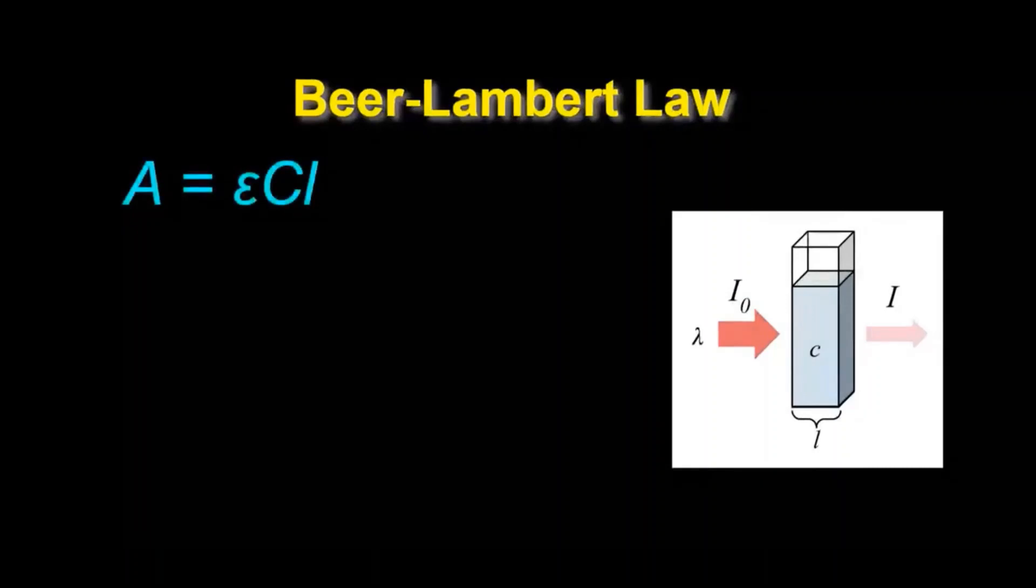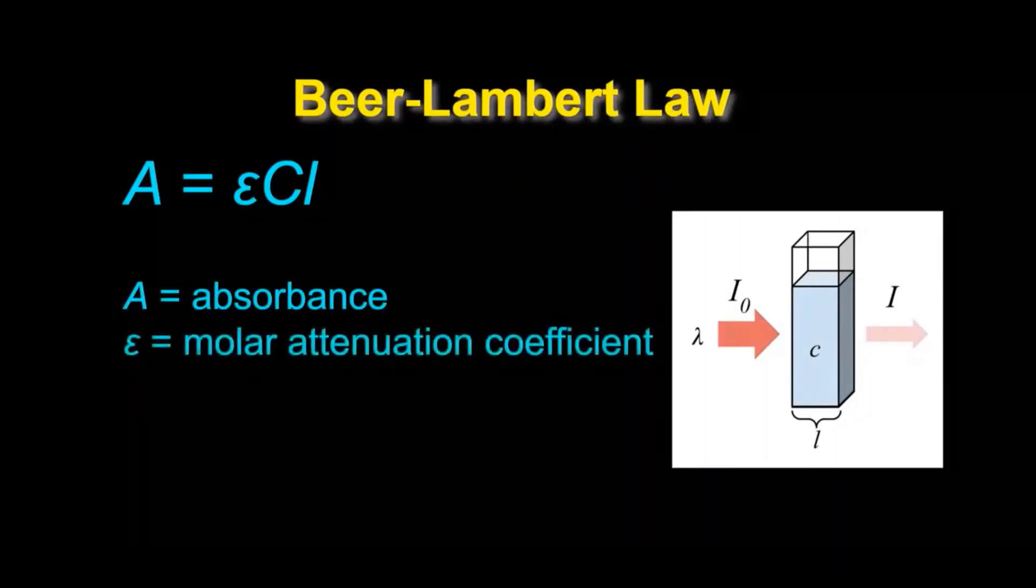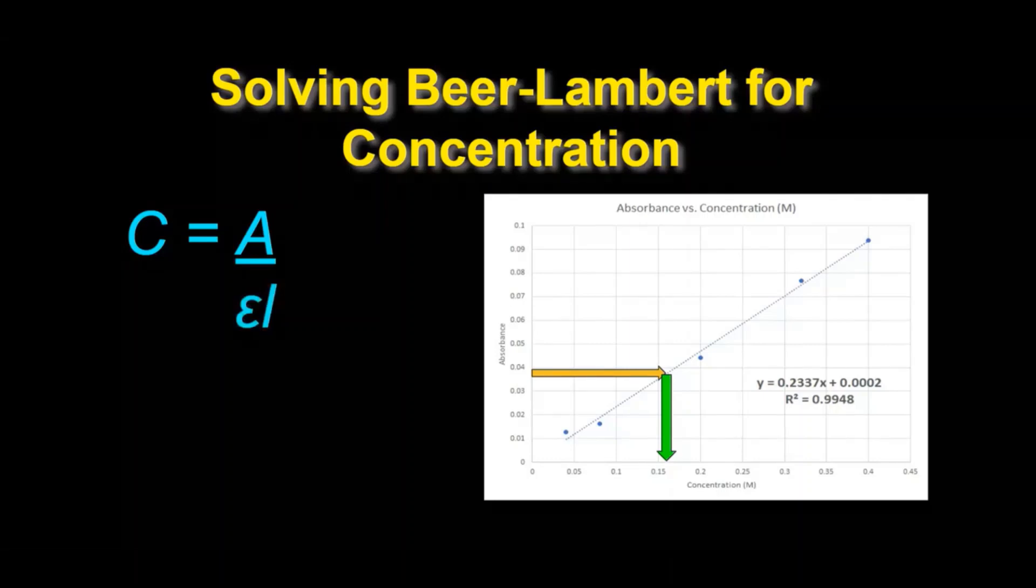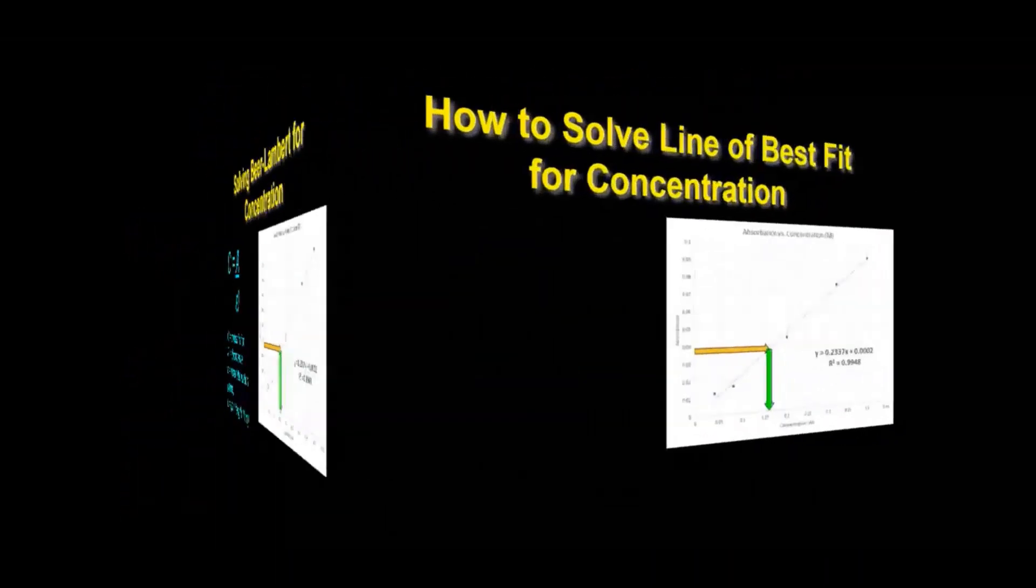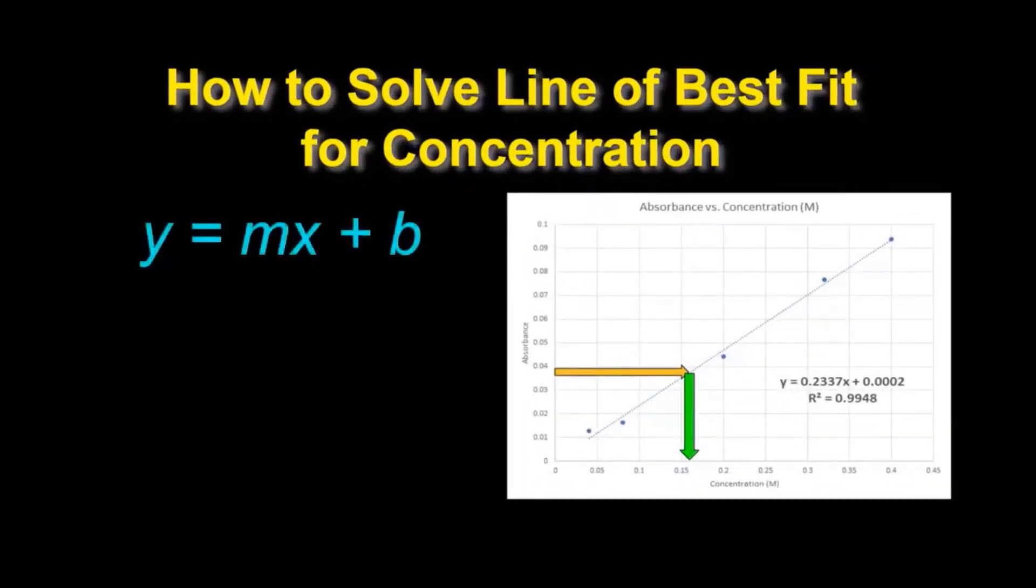The Beer-Lambert law summarized A equals epsilon CL with A being the absorbance, epsilon being the molar attenuation coefficient, and C being concentration. L is the path length. Now rearranging this we solve for C. We get A divided by epsilon L. Now remember the molar attenuation coefficient is the slope. The path length is one centimeter. This is not going to factor into the calculation.